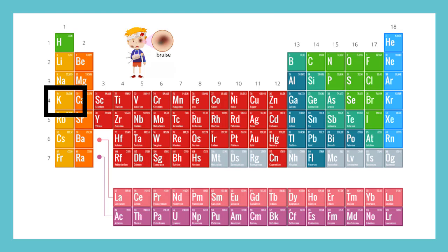Atomic number nineteen is potassium, which we give a symbol K. Potassium is found in fruits and vegetables, and helps your body heal from bruises and sore muscles.